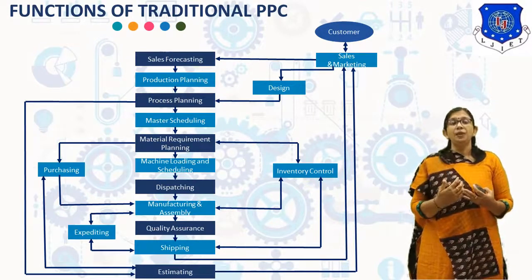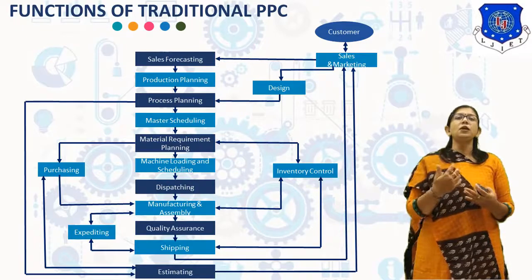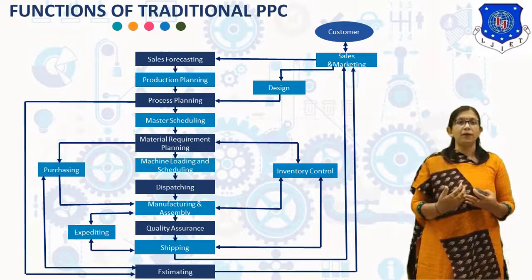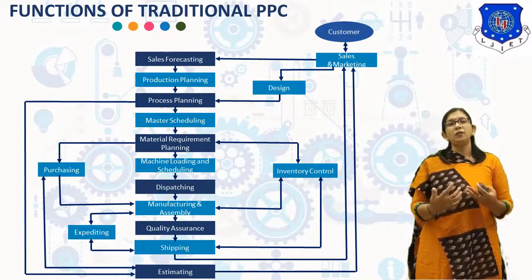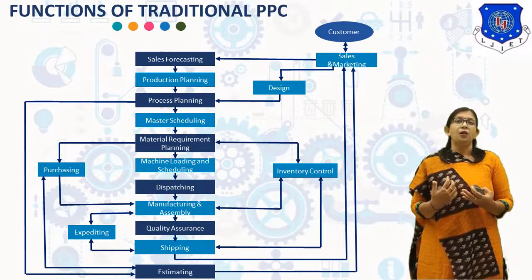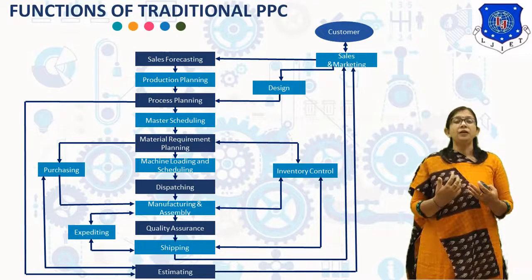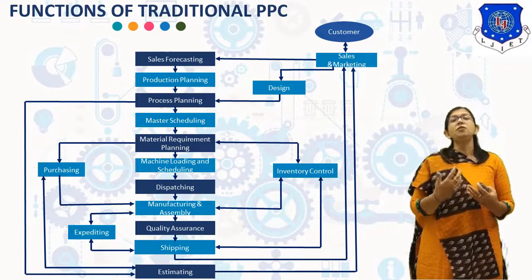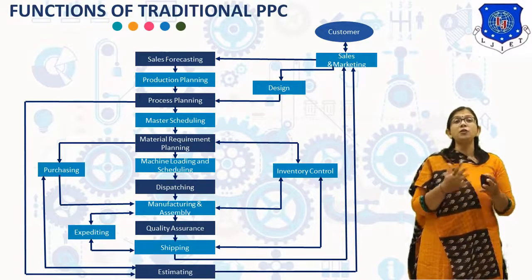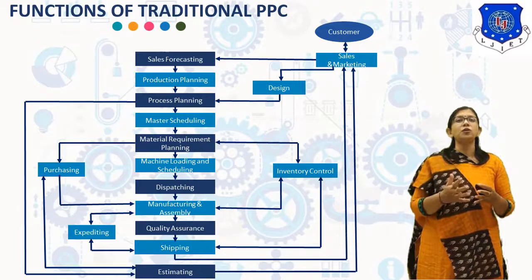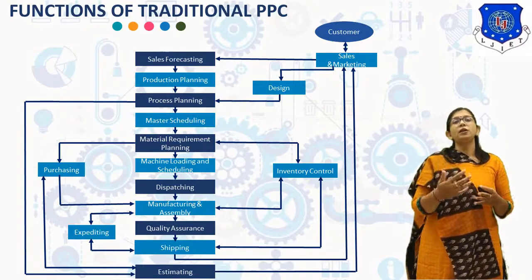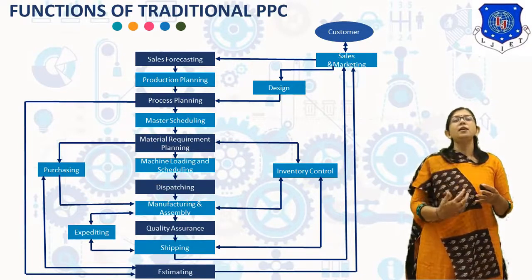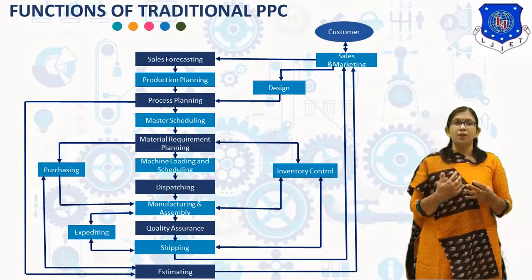The next function is Dispatching, which deals with issuing orders to each machine operator. It involves issuing the route sheet, part drawing, job instructions, and raw material. Next is Expediting, which is a function of comparing the actual progress of a particular order with the production schedule. This function is performed by an Expeditor. If the progress of a particular order falls behind schedule, the Expeditor recommends a corrective action.